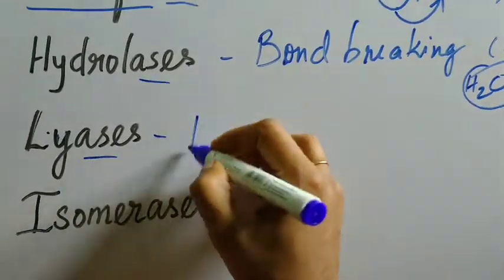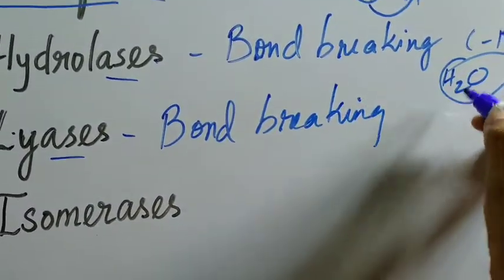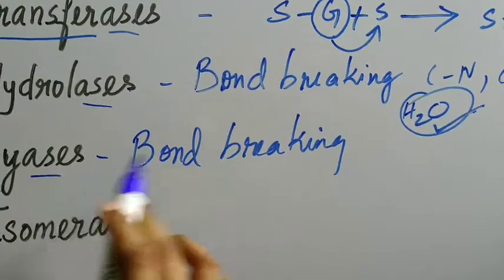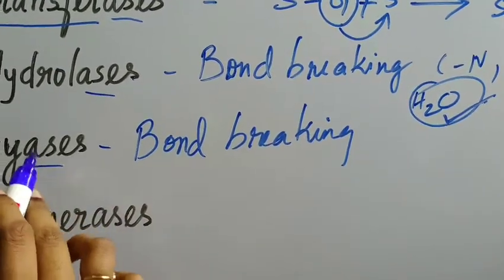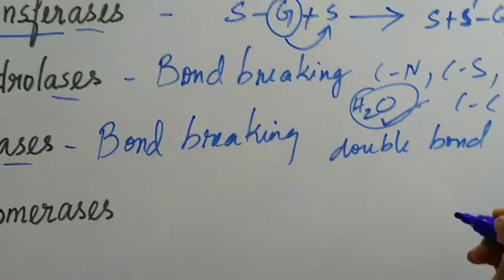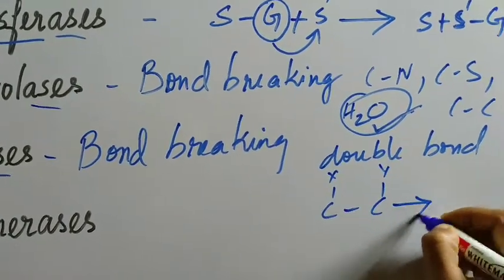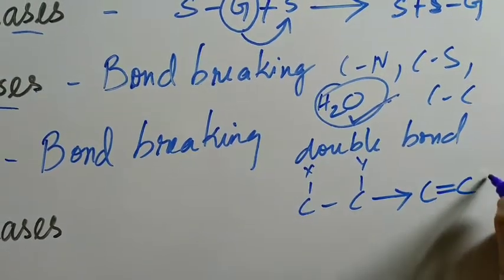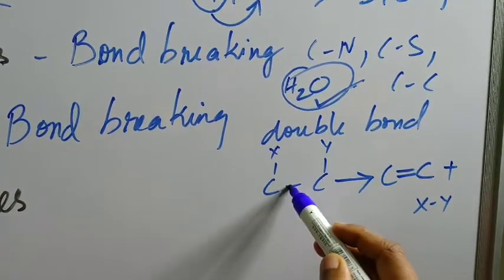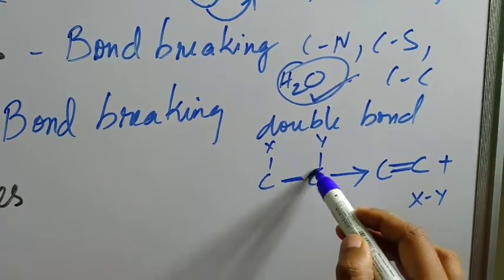Next is lyases. Lyases are also enzymes taking part in bond breaking, but without the involvement of water. And by the end of reactions in which lyases take part, double bonds are formed. For example, by the end of the reaction, a double bond is formed between both the carbon molecules.